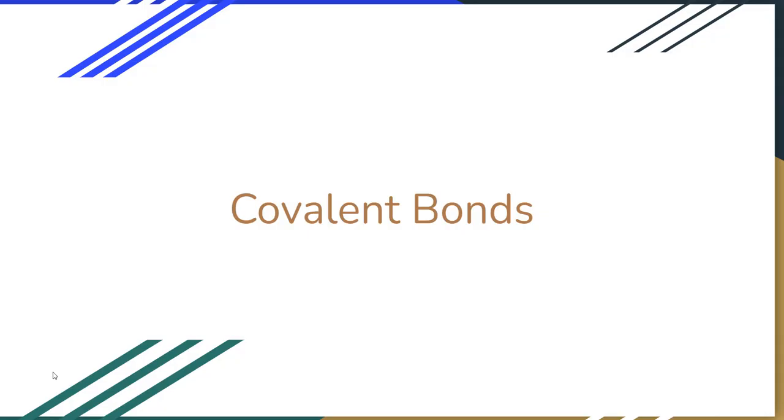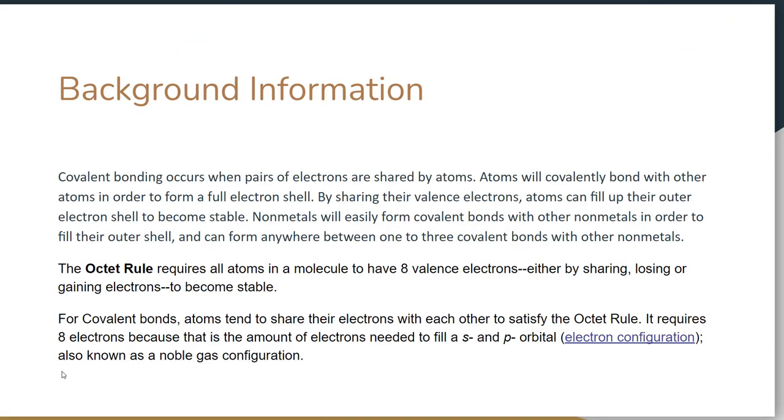Welcome back to the Cave of Science, and today we're going to do a discussion on covalent bonds. Covalent bonding occurs when pairs of electrons are shared by atoms, and these are typically done with non-metals.